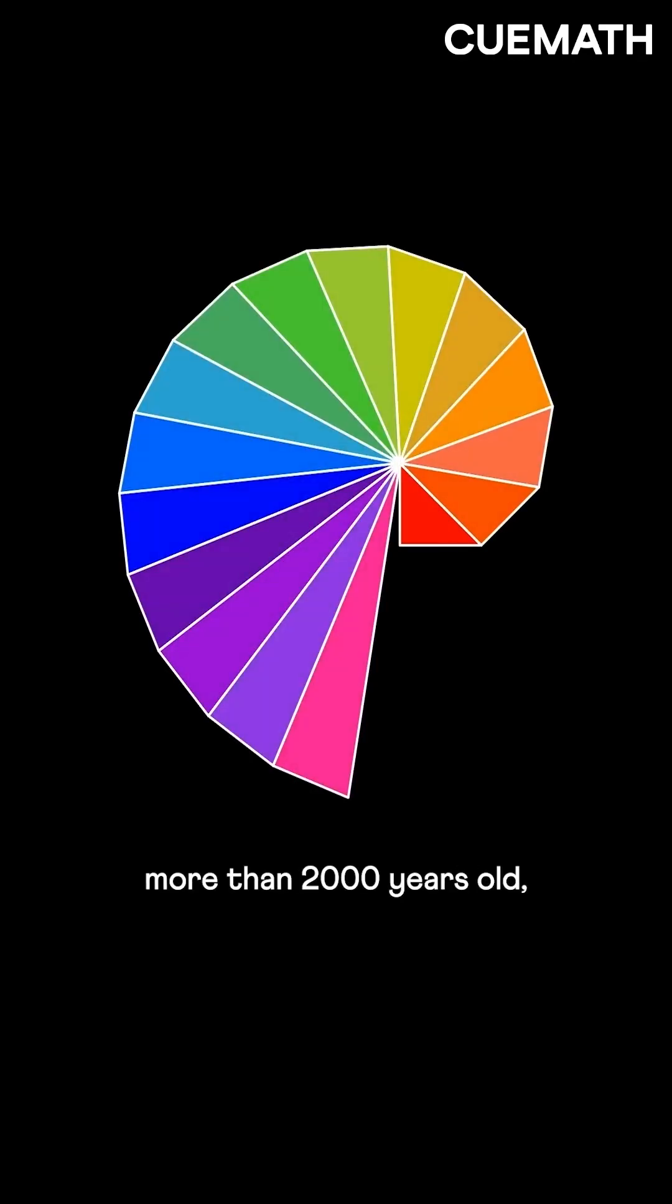This beautiful spiral is more than 2,000 years old, and we can create it using just right triangles.